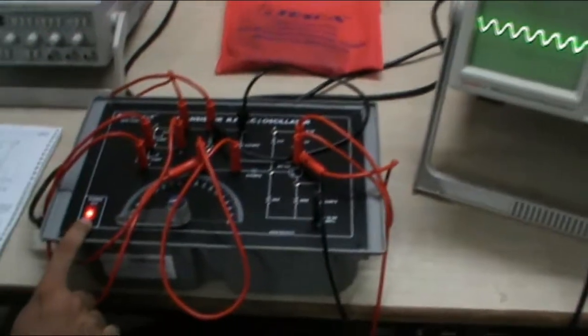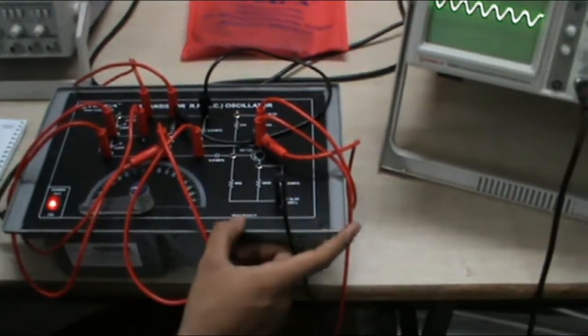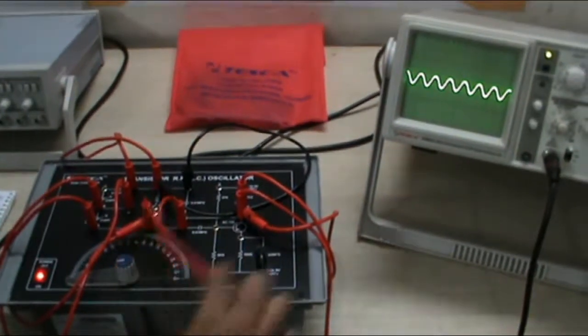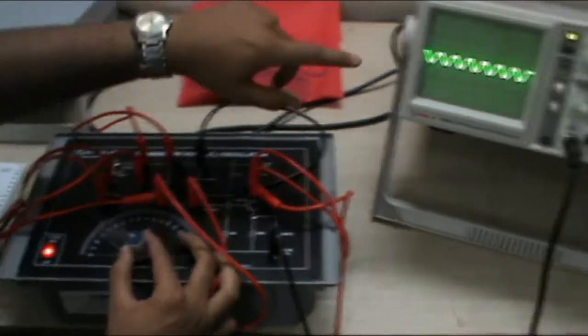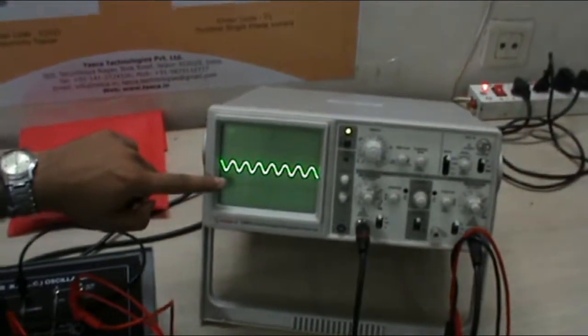This is the connection and connect the output between this ground and H with the help of this CRO cable. Now as we switch on our main supply this is the waveform appeared for the Clapp oscillator. Now by varying this frequency meter you can see that there is a slight variation in the Clapp oscillator.